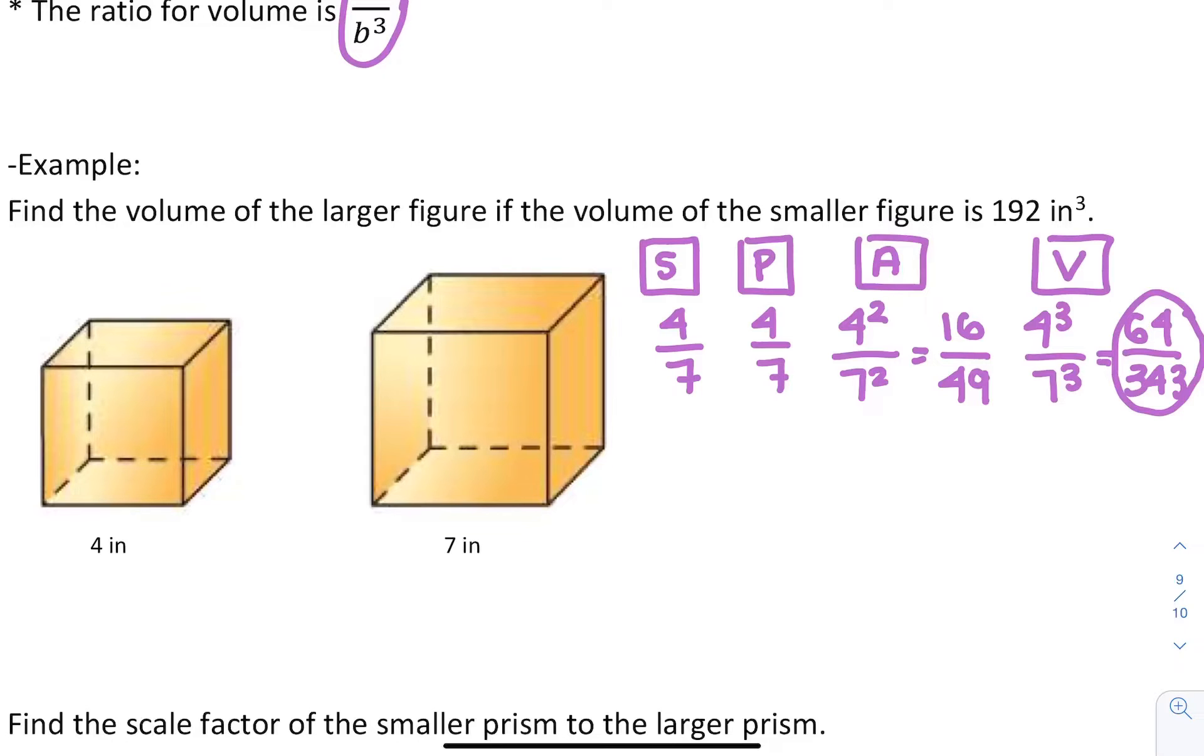In this problem, we know the volume of the smaller figure is 192 inches cubed, and we want to know the volume of the bigger figure. To figure it out, we're going to write a proportion using the volume ratio, because that's what we're trying to figure out.